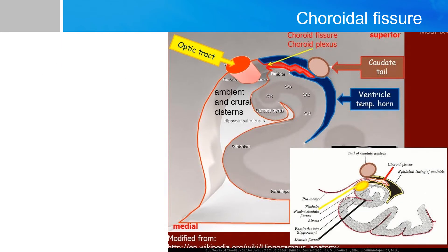Another very important anatomical structure is the choroidal fissure, which is the site of attachment of the choroid plexus in the lateral ventricle. The choroidal fissure is divided into three parts, but at the temporal location it is situated in the temporal horn between the fimbria of the fornix and the lower surface of the thalamus and the medial part of the lateral ventricle. Opening through this structure exposes the ambient and crural cisterns.